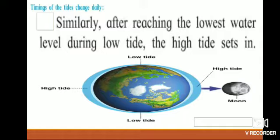Similarly, after reaching the lowest water level during low tide, the high tide sets in. There is high tide and low tide twice a day. A day is 24 hours — how many times do we have high tide? Twice. And how many times low tide? Twice. The time difference between two high tides is 12 hours and 25 minutes.